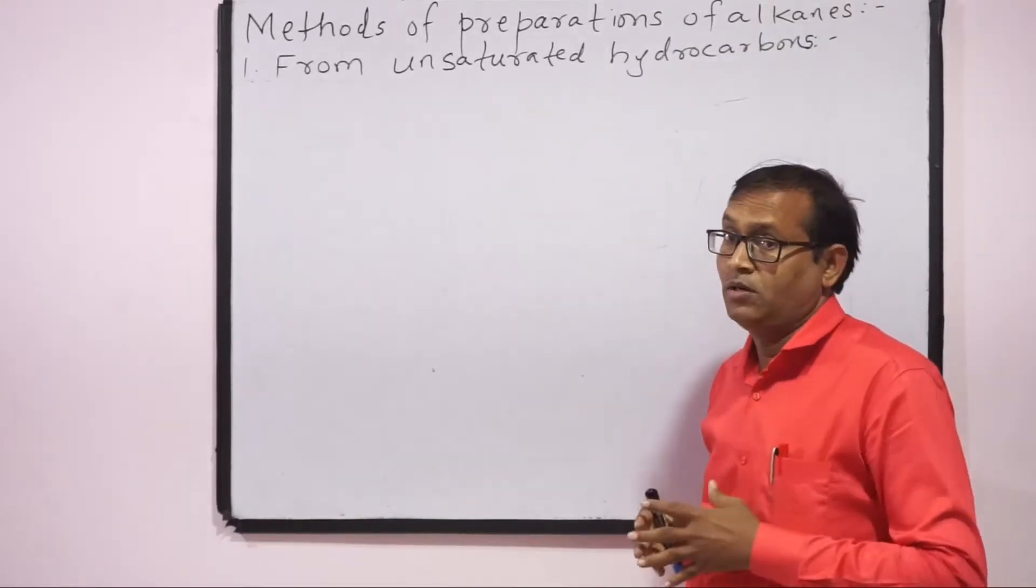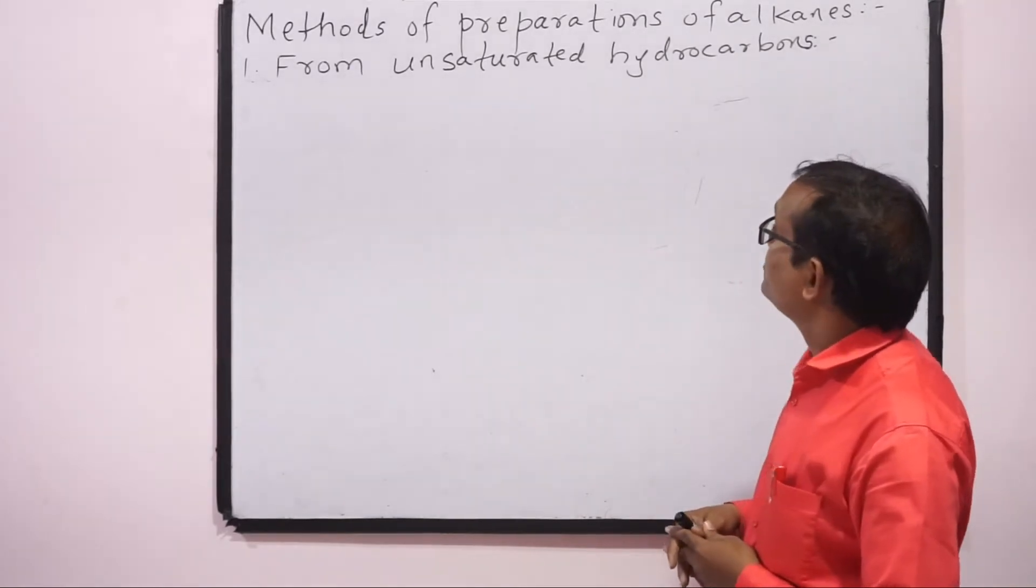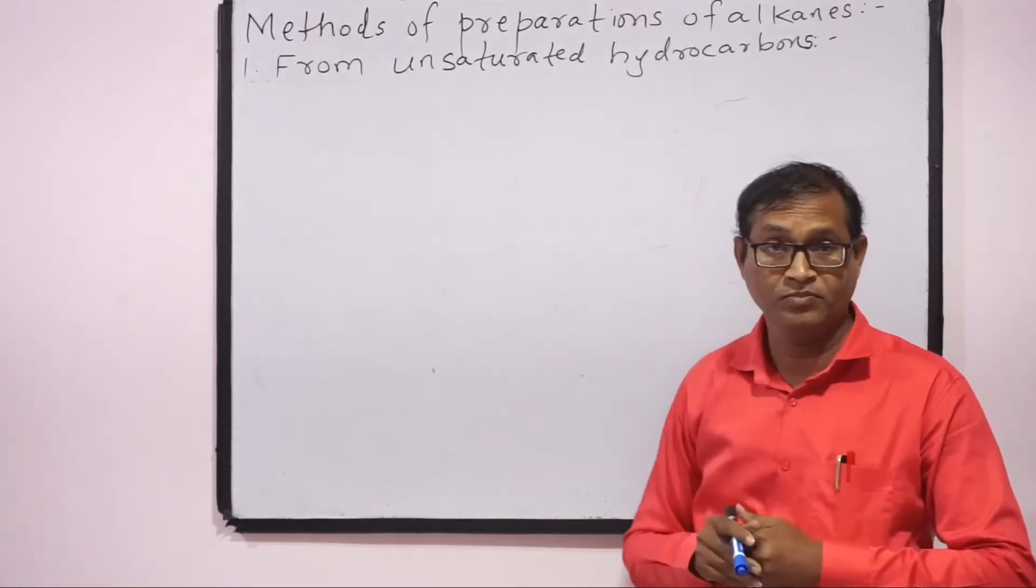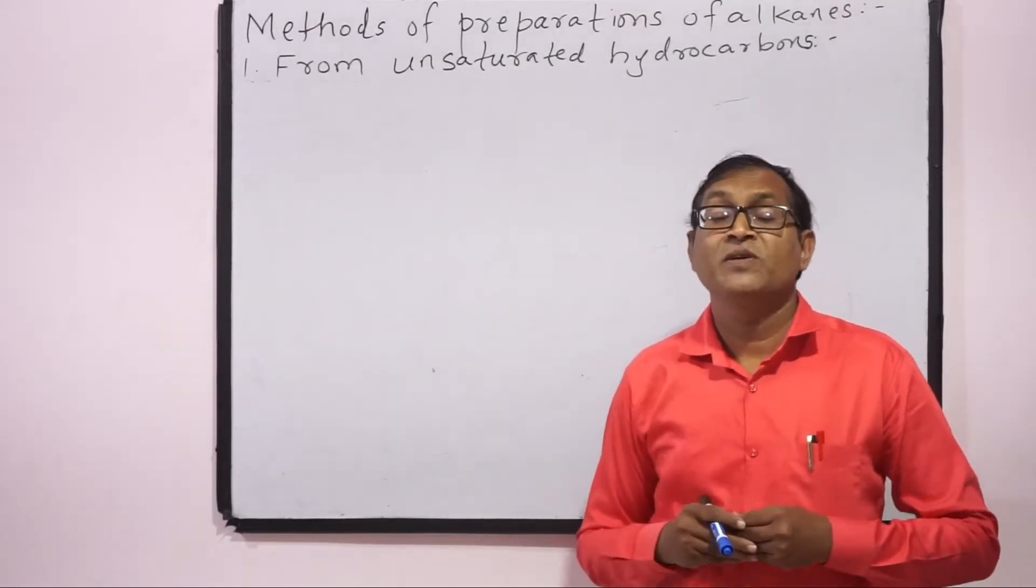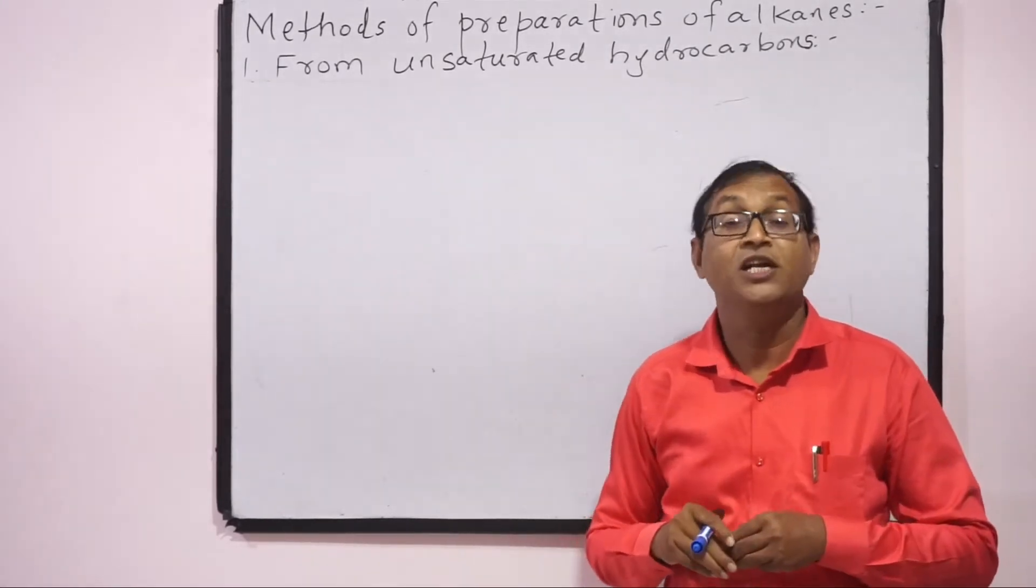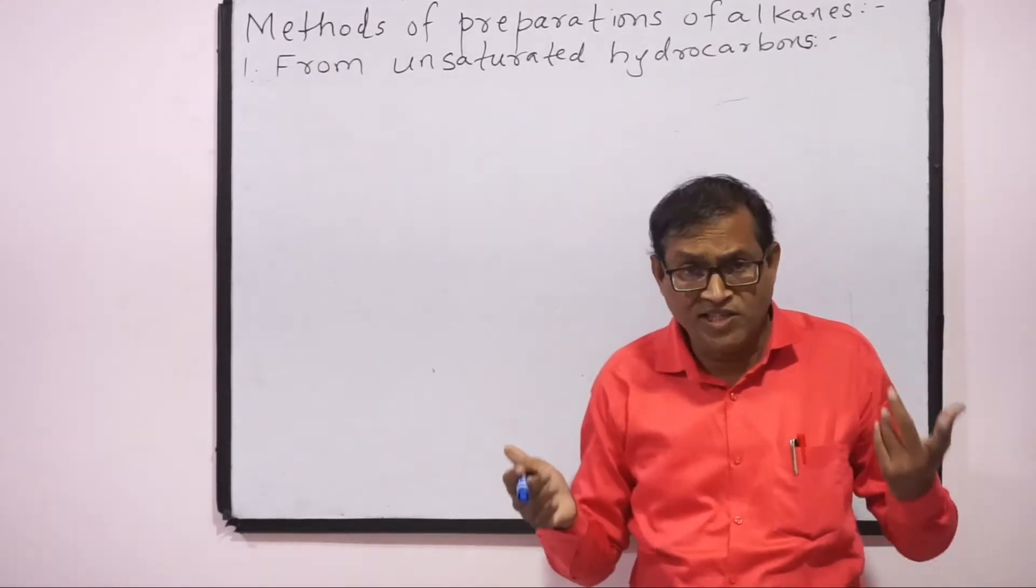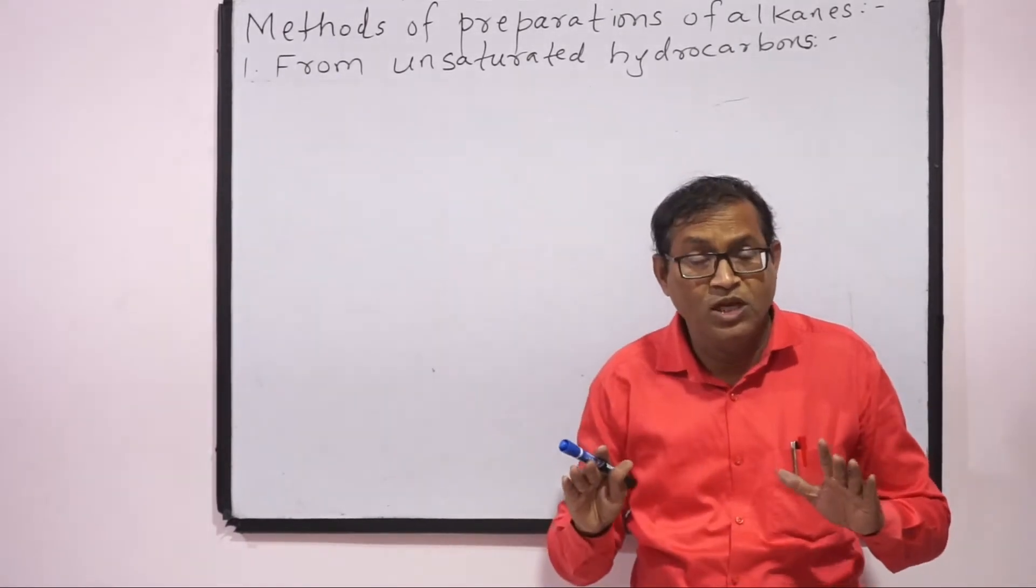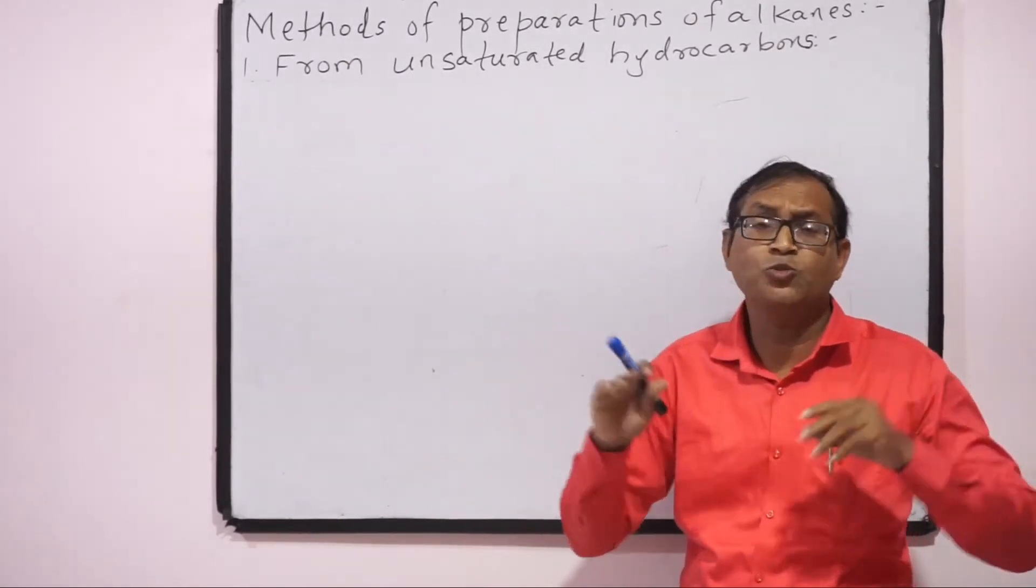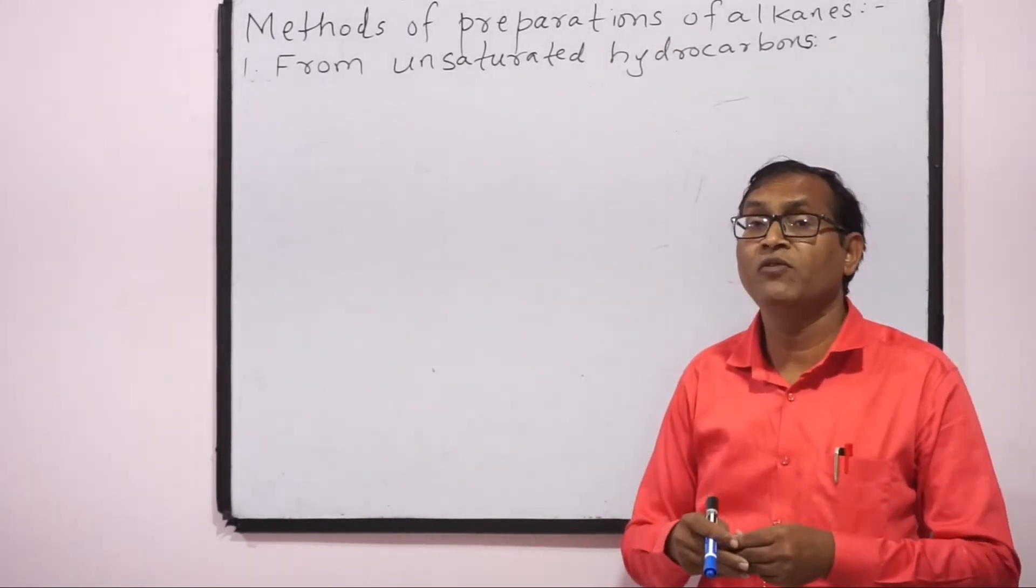We are going to deal with methods of preparations of alkanes. First is from unsaturated hydrocarbons. These are hydrocarbons which are not fully satisfied. Now we are going to know if carbon is fully satisfied or not. If carbon is single bond, then the valences of carbon are fully satisfied. If carbon is double or triple bond, then the valences of carbon is not fully satisfied.